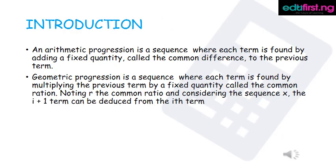Last class we talked about arithmetic progression, that is a sequence where each term is found by adding a fixed quantity called the common difference to the previous term. Today we'll be talking about geometric progression. Geometric progression is a sequence where each term is found by multiplying the previous term by a fixed quantity called the common ratio, denoted r.